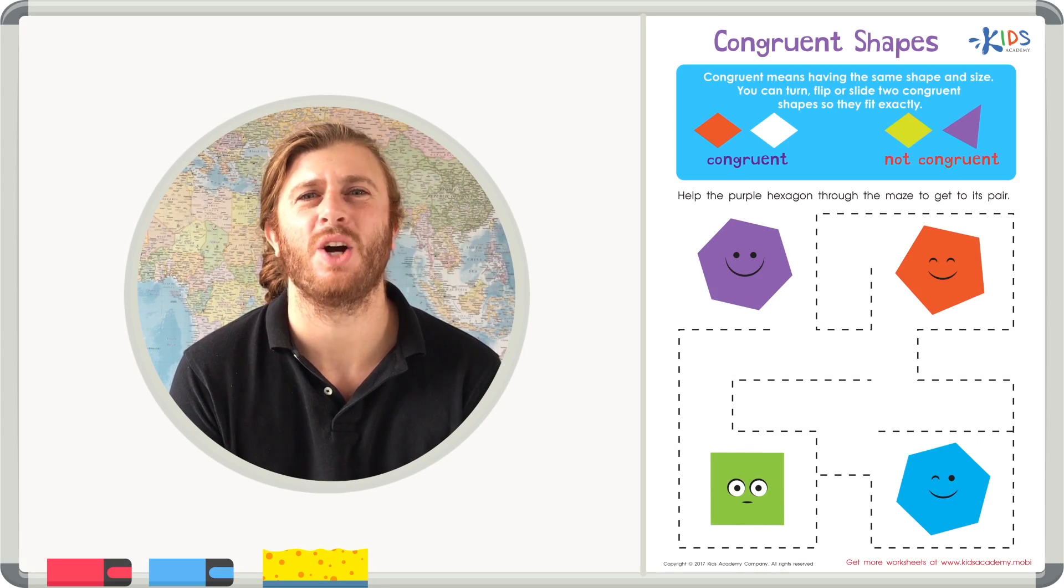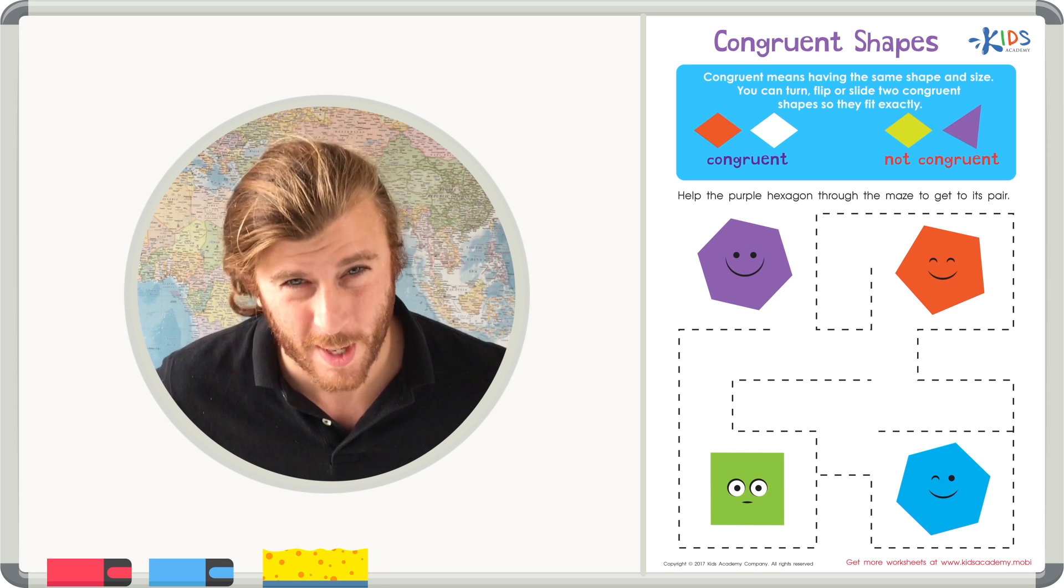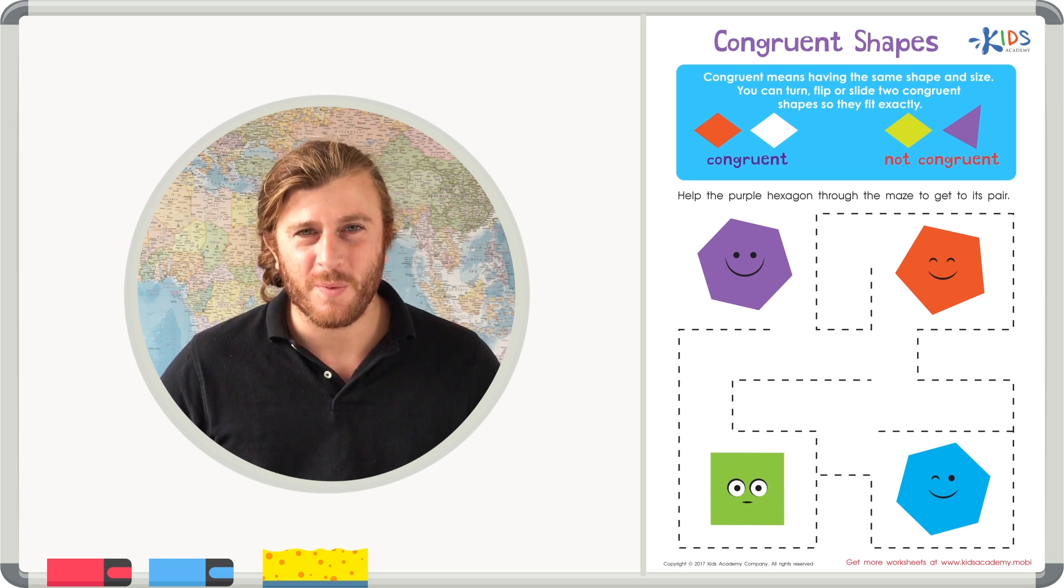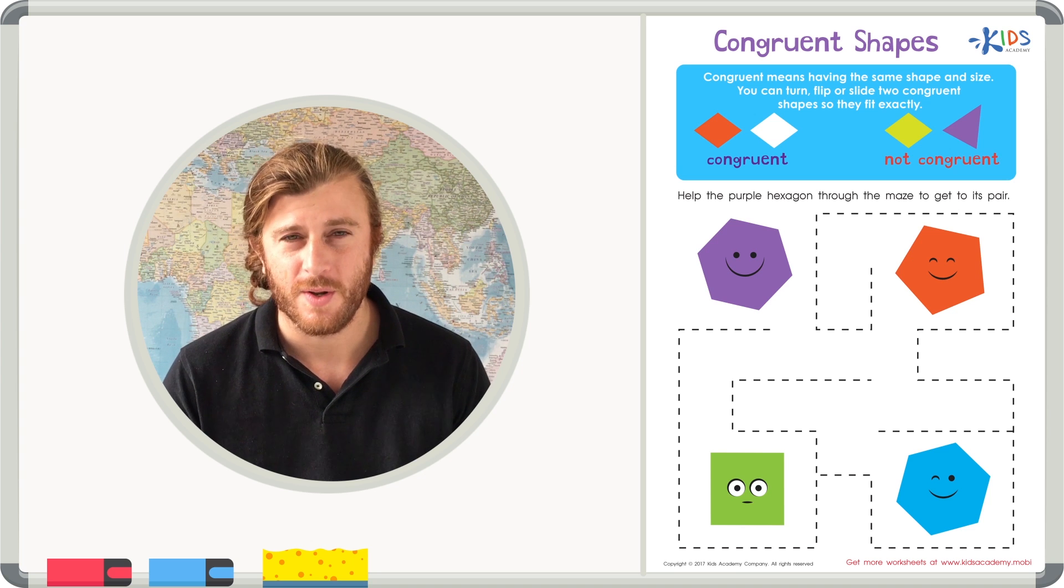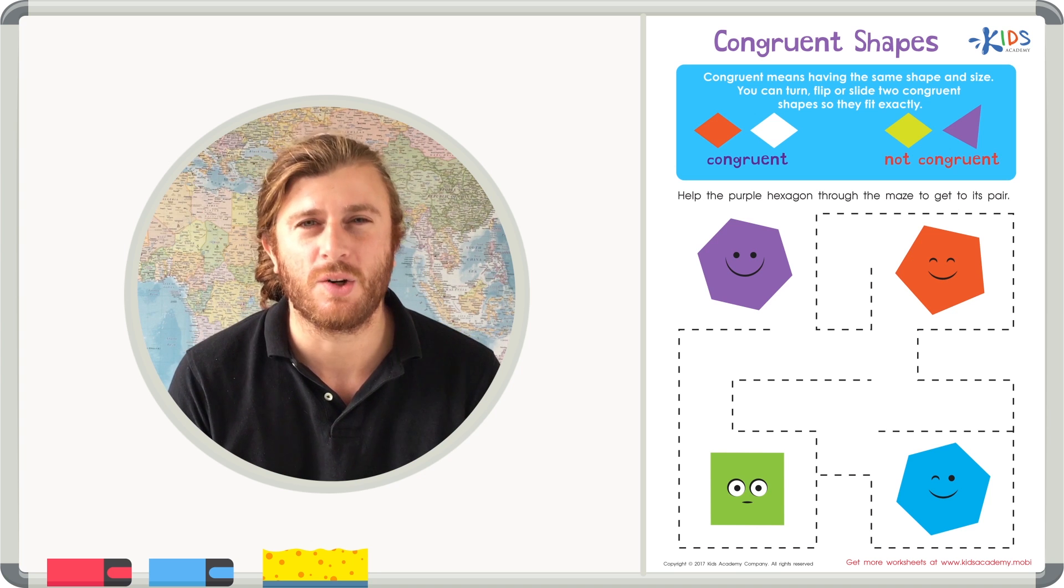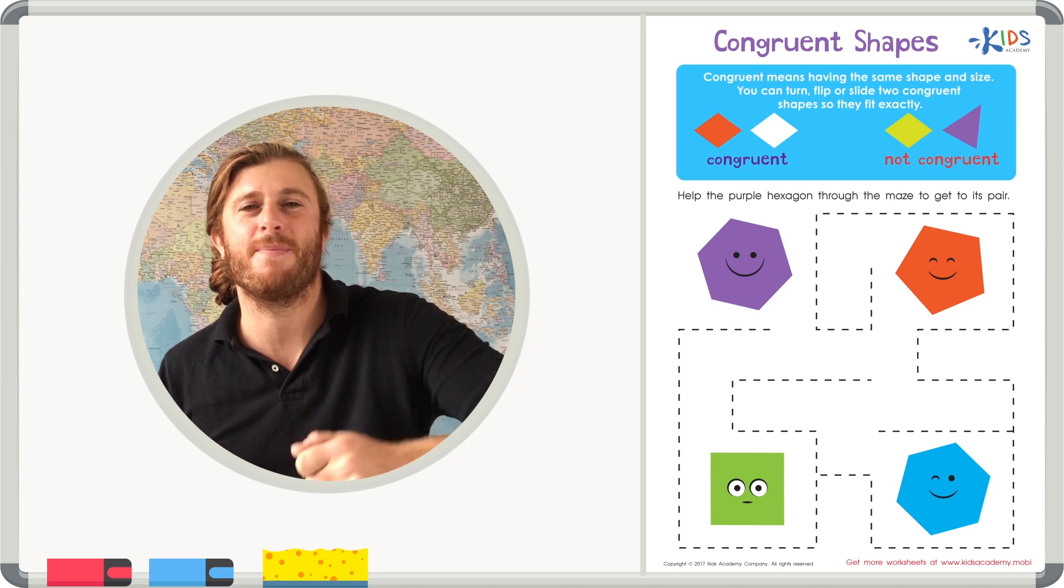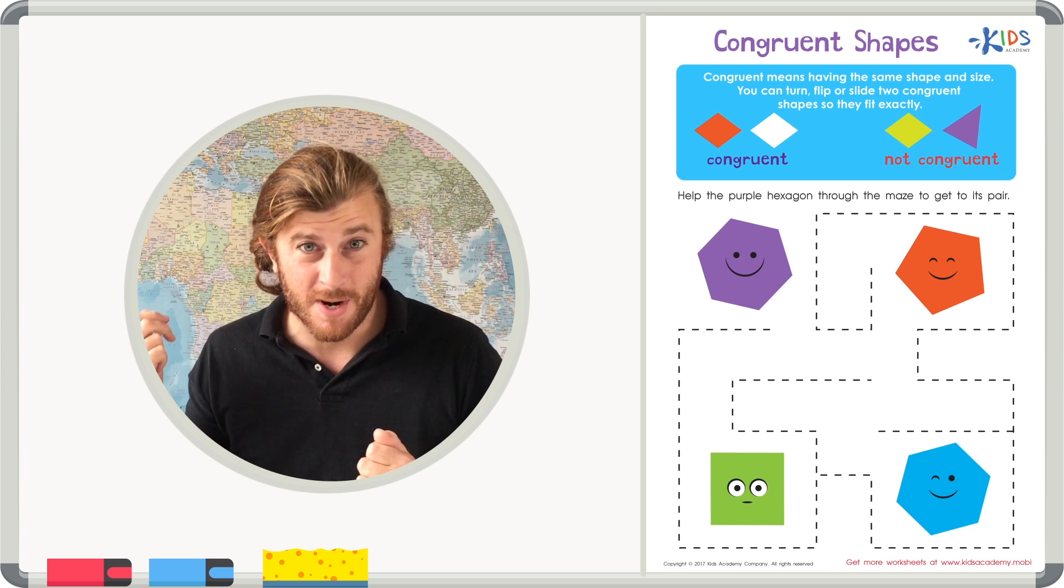Today we're going to be talking about congruent shapes. Congruent is a very weird word to say, but really when you think about the word congruent, you can just think about the word equal. Congruent means the same, the same size, the same shape, the same number of angles, the same number of sides.